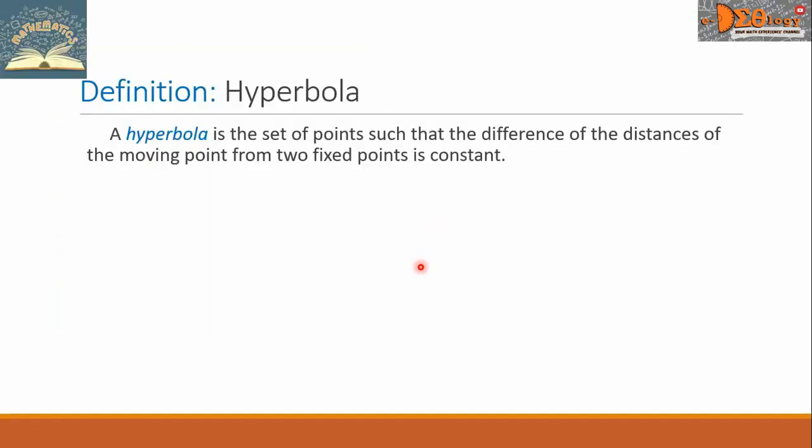First, let us define hyperbola. A hyperbola is the set of points such that the difference of the distances of the moving point from two fixed points is constant.